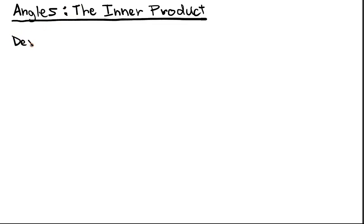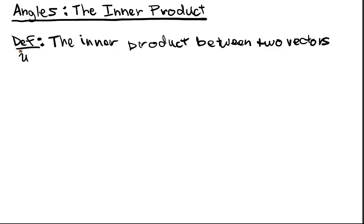So definition. And we're going to explain why this is important. There is an intimate relationship between the inner product or dot product and angles. So the inner product between two vectors, say u and v, is the quantity.